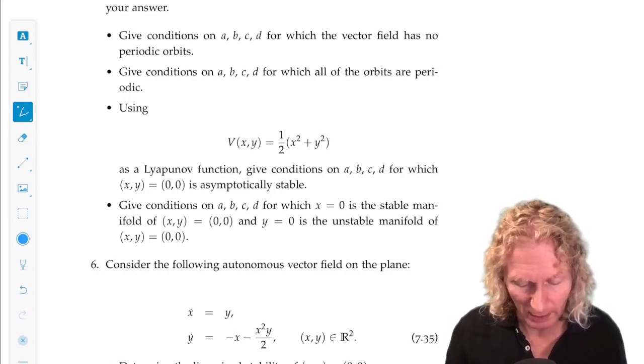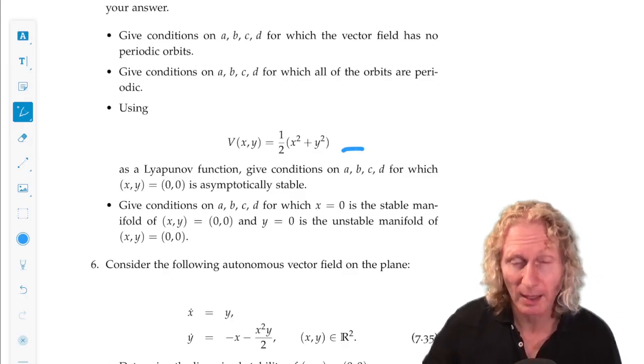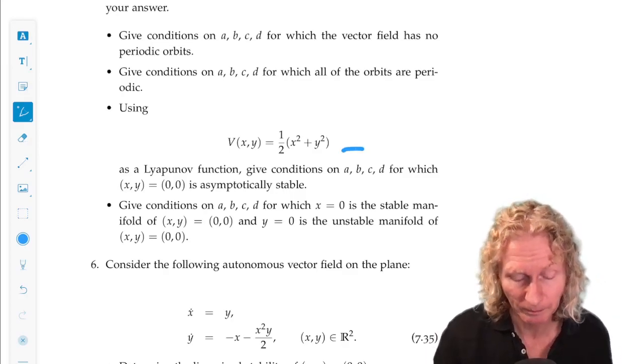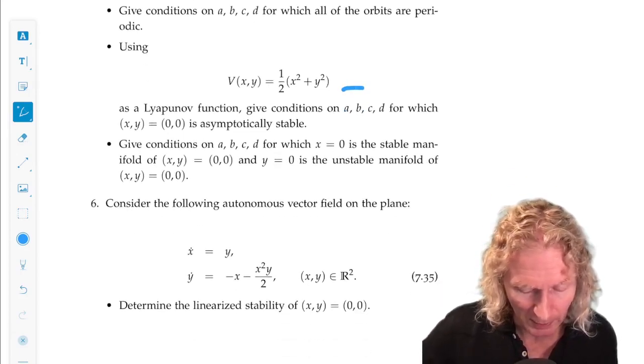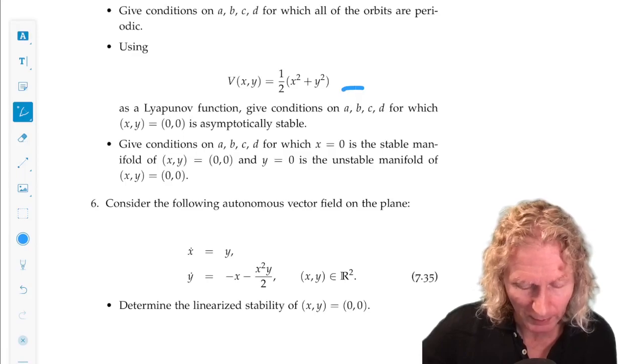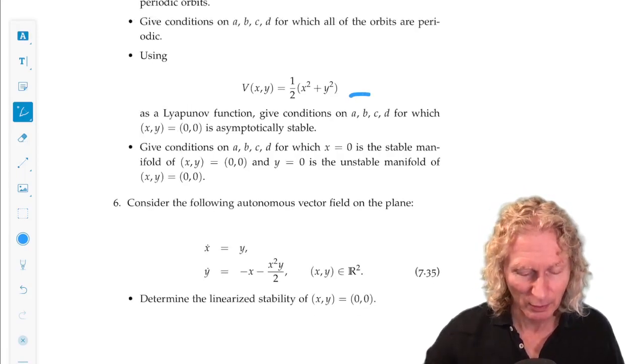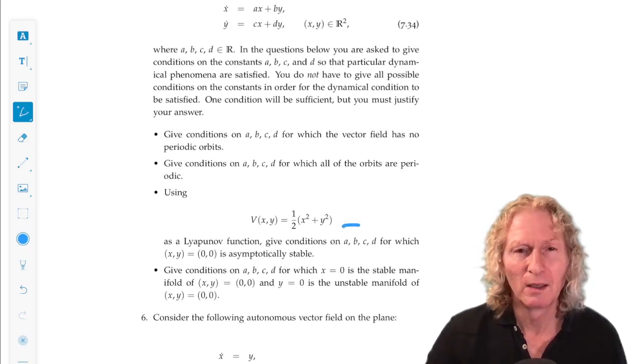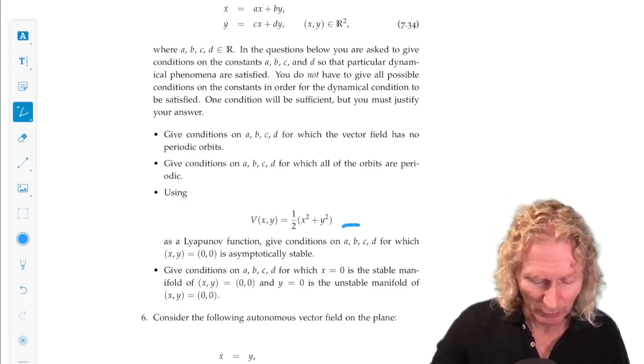Using this as a Lyapunov function, give conditions on ABCD for which the origin is asymptotically stable. And finally, give conditions on ABCD for which x equals 0 is a stable manifold of the origin and y equals 0 is the unstable manifold of the origin. So, this problem will make you look at everything we've done up to this point. So, it's a good problem.